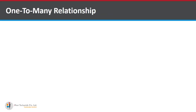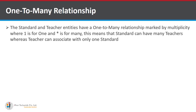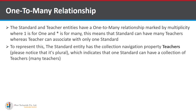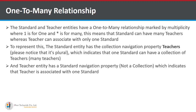One-to-many relationship is a type of cardinality where an element of A may be linked to many elements of B, but a member of B is linked to only one element of A. Standard and Teacher have a one-to-many relationship marked by multiplicity — one is for one, star is for many. This means a Standard can have many Teachers, whereas a Teacher can be associated with only one Standard. The Standard entity has a collection navigation property Teachers (plural), indicating one Standard can have many Teachers.